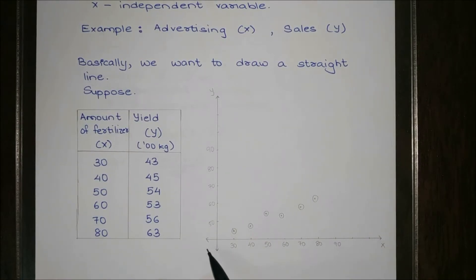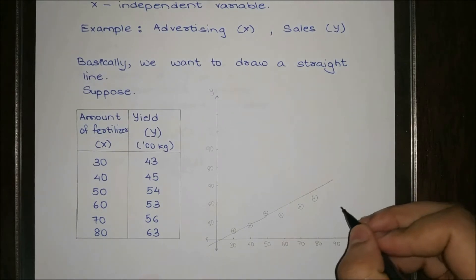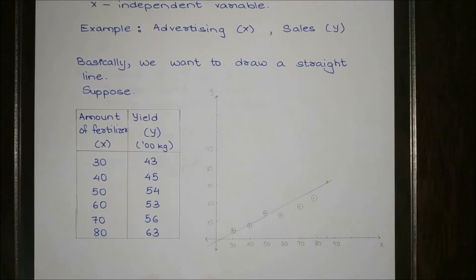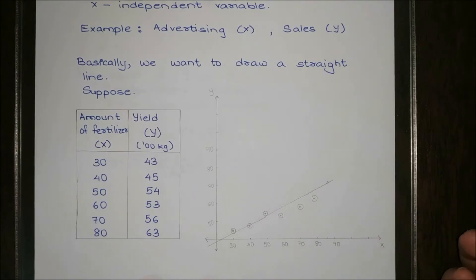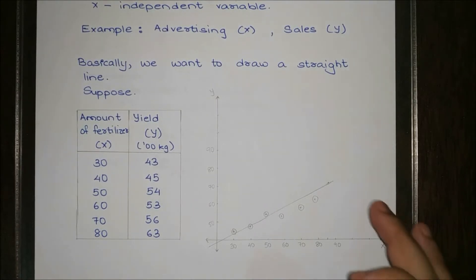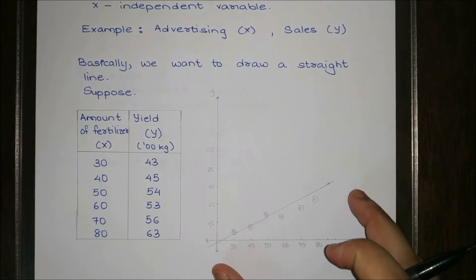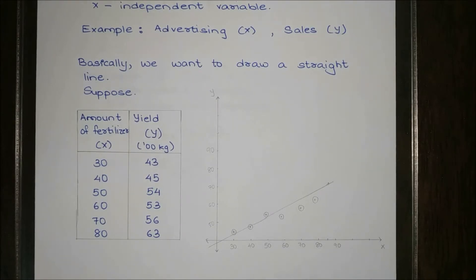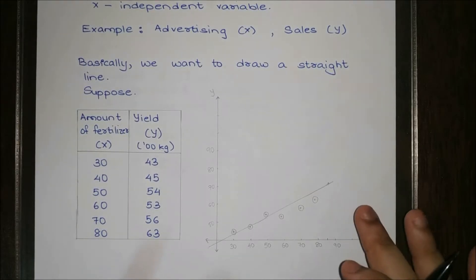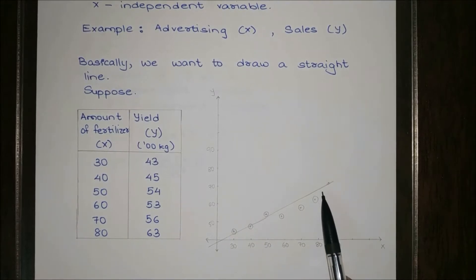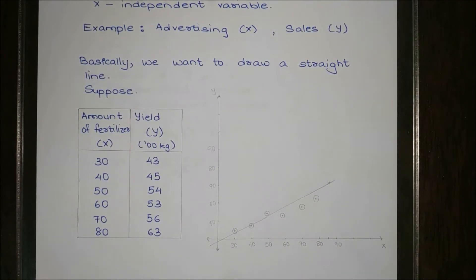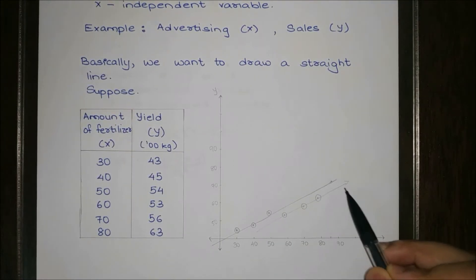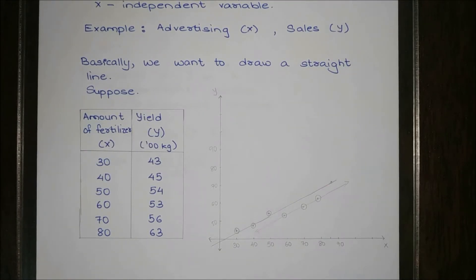In regression, we need to draw a line through all these points. It's not possible to draw one line through which all points pass exactly, so we need to find the best line for all these points. Once we have that line equation, for any new x value we can easily find the corresponding y value. Finding the equation of this line is what we call regression. For linear regression, we get a line; for more complex regression, we'd get curves.